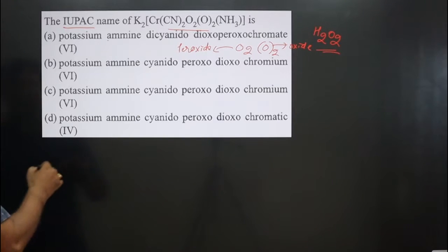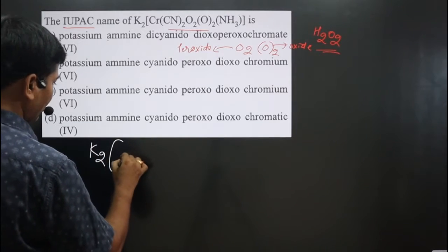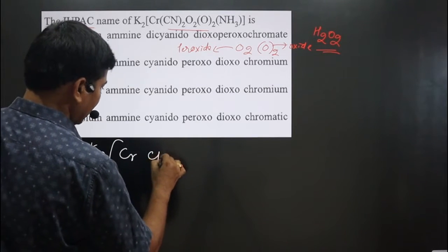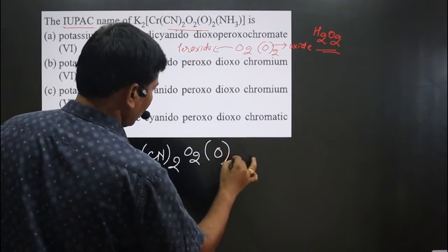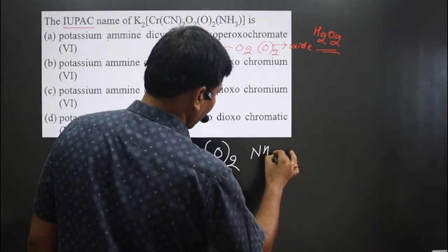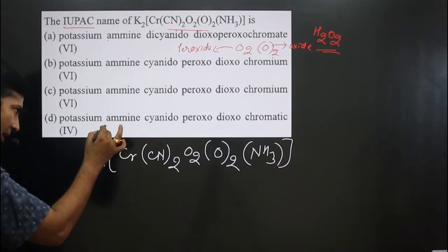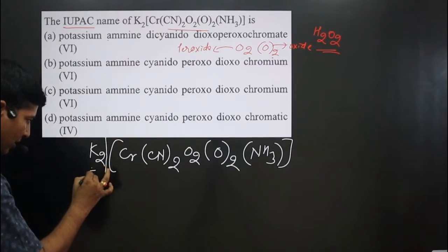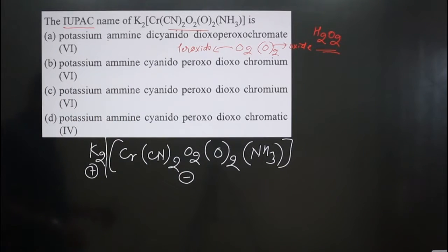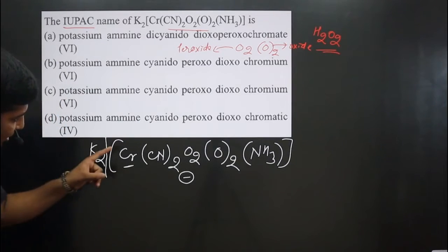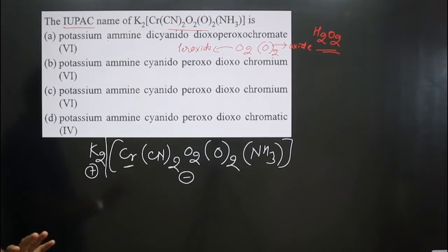Looking at the complex, let me first write it down: we have K₂[Cr(CN)₂(O₂)(O)₂(NH₃)] — potassium, chromium, cyanide (CN) twice, O₂ which is the peroxide, (O)₂ which is the common oxide, and one molecule of ammonia. If we break this complex, the left part is the positive part and the entire bracketed portion is the negative part. Since the central metal atom chromium is in the negative part, we use its special anionic name: chromate.